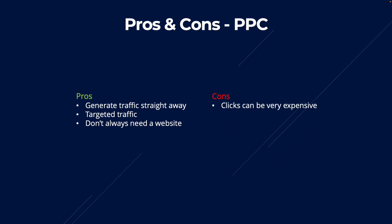Moving on to the cons. The first con of PPC is that clicks can be very, very expensive. To give you an idea, it's going to vary depending on what keywords you're targeting and in what areas, but if I was to bid on any SEO-related keyword for my agency ClickSlice — such as 'SEO Agency London' or 'SEO Consultant London' — I could literally be spending £20 a click, which is absolutely insane.